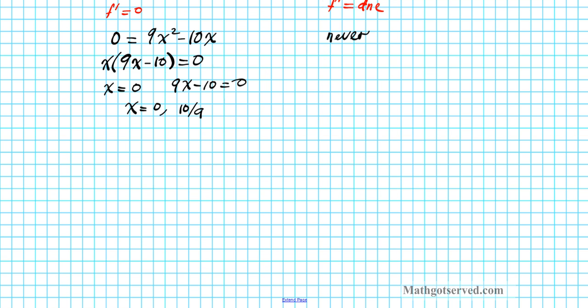So that being said, our critical points, we have two of them, also known as our potential extrema. Potential extrema are c1 equals zero and c2 equals 10 over 9. Remember, your critical points are not automatically an extrema. They could be critical points, but still not be an extrema. Now, how do we know that it's an extrema? What test are we going to use?